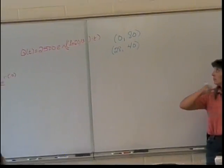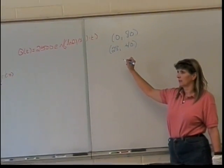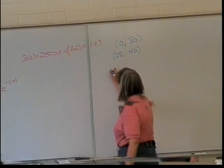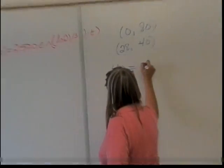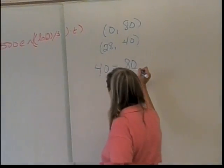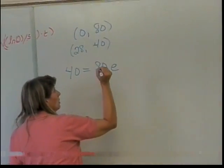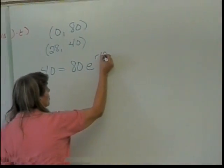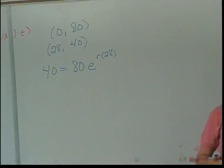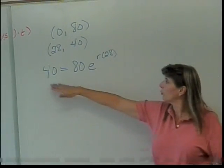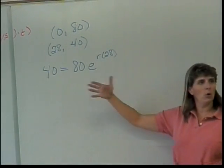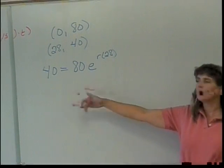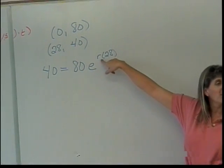Set up the problem with 40 equals 80 times e to the r times 28. See how that's set up? We know after 28 years we're down to 40. We started with 80. So here is our setup to help us solve for the decay rate.